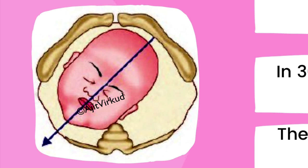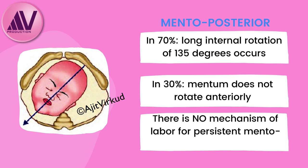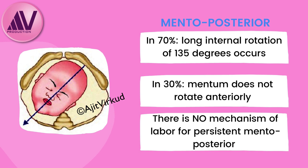Mechanism of labor in mento-posterior position is as follows. In 70% of cases, the mentum undergoes long internal rotation of 135 degrees to reach the pubic symphysis and head is borne by flexion — vaginal delivery is possible. In the remaining 30% of cases, mentum does not rotate anteriorly and there is persistent mento-posterior presentation. There is no mechanism of labor for persistent mento-posterior, and hence spontaneous or instrumental vaginal delivery is impossible unless mentum is rotated anteriorly. If the mentum is posterior or transverse, the fetal neck is too short to span the length of the maternal sacrum and is already at the point of maximal extension. The head cannot deliver as it cannot extend any further through the symphysis, and cesarean delivery is the safest route. Persistent mentum posterior can only deliver by extension, but the head is already extended maximally and thus delivery is not possible.